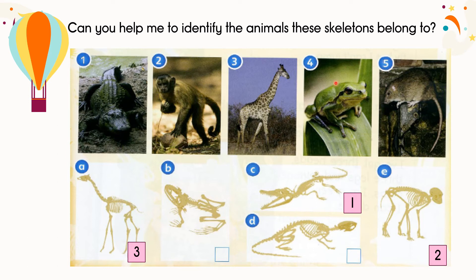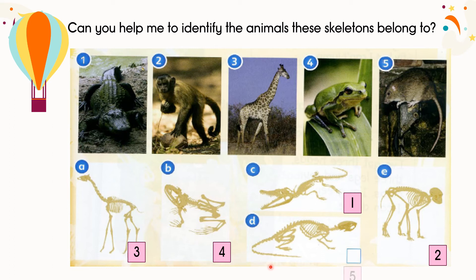Number four — what animal is this? It's green, and it can jump. Yes, it's a frog. Which skeleton shows a frog — is it B or D? Well done. It's B. Last but not least, picture number five — what animal is this? It's a rat. So, the skeleton is D.